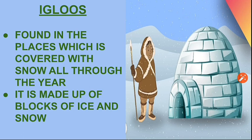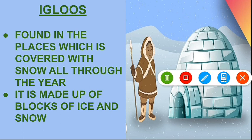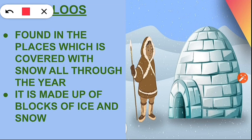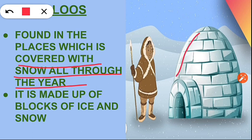Then comes igloos. These are a different kind of house, mainly found in places covered with snow all through the year. As you can see in the diagram, these houses are made up of blocks of ice and snow.